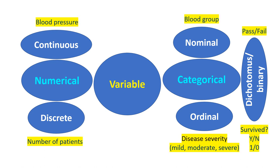Here are some examples. Blood group is a categorical variable — it can be A, B, AB positive, A negative, B negative — and it is nominal. There is no order, no grading; having blood group A is not better than blood group B. Disease severity — mild, moderate, severe — is also a categorical variable, but there is an order, which is why it is called an ordinal variable. Did you pass the exam? Yes or no — that is a dichotomous or binary variable. Is it male or female? That is also a dichotomous variable.